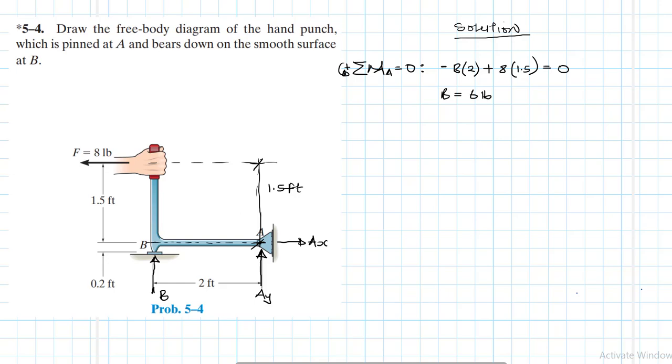So now let's find what Ay and Ax is. Summation of forces in the X direction equal to 0. We have Ax minus 8 is equal to 0. Therefore, Ax is going to be equal to 8 pounds.